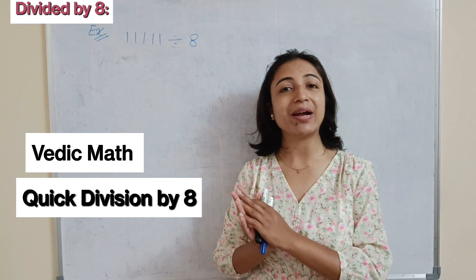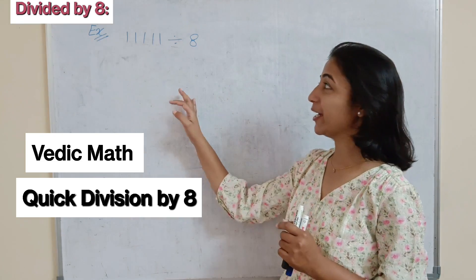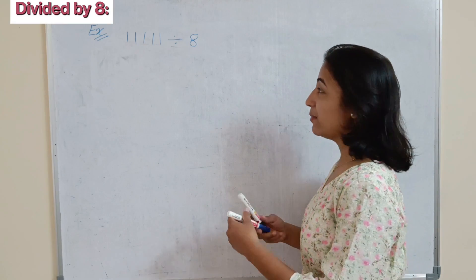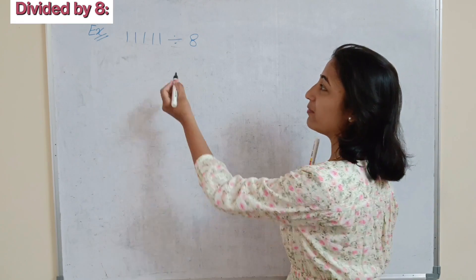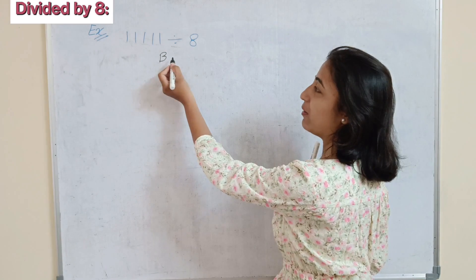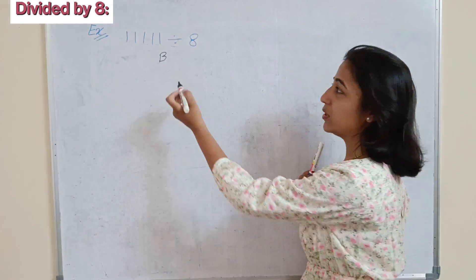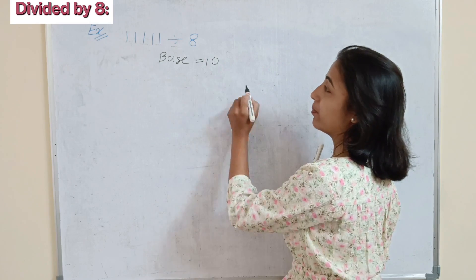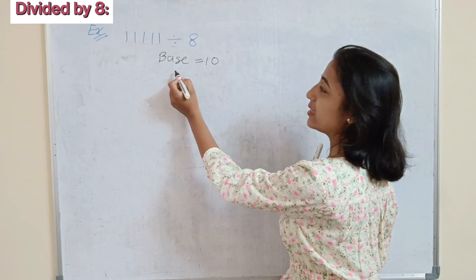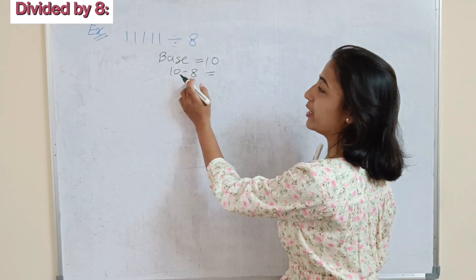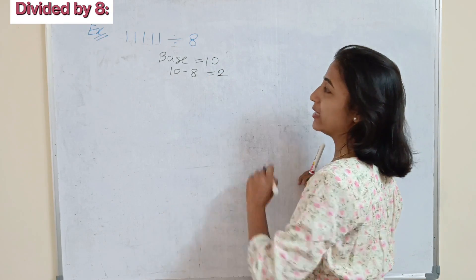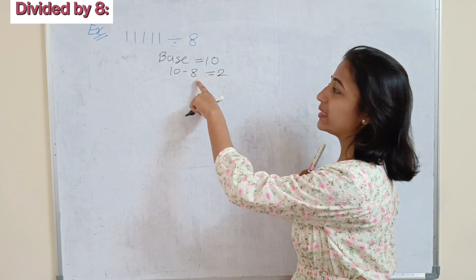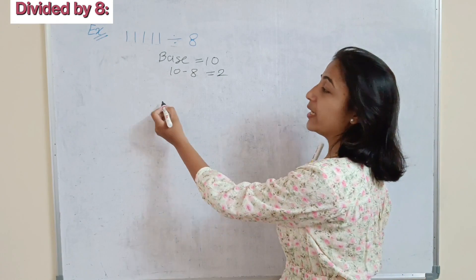In this video we are going to discuss how to divide any number by 8. Here 8 is near to the base 10. Our base number is 10 — we take numbers that are powers of 10: 100, 1000, 10000. So 8 is near to base 10 and it is 2 less than 10.